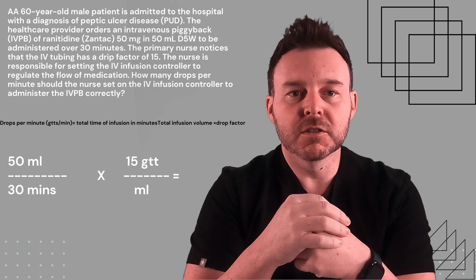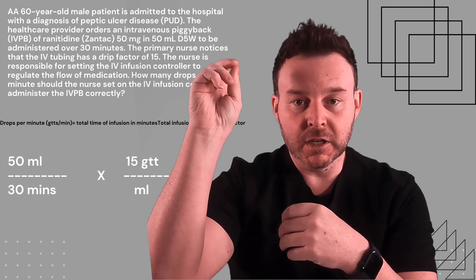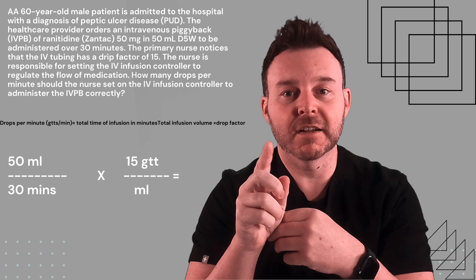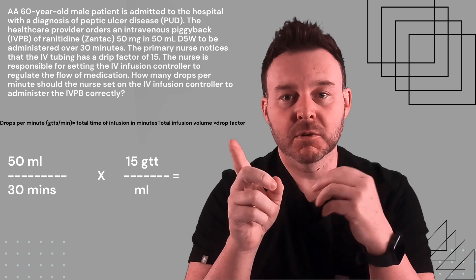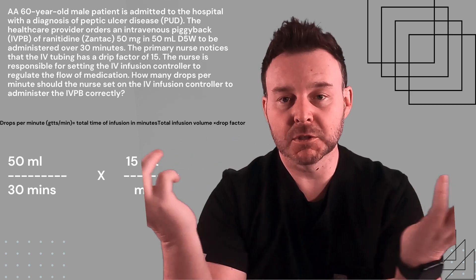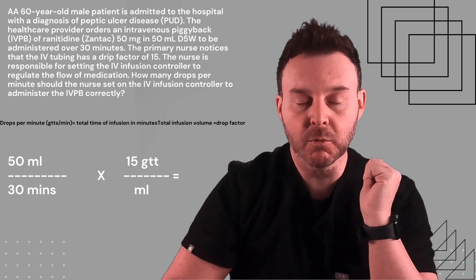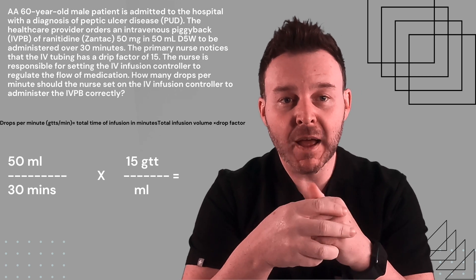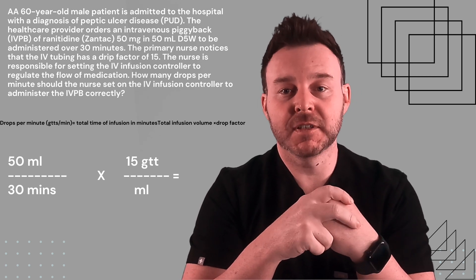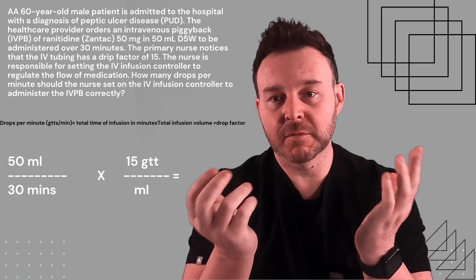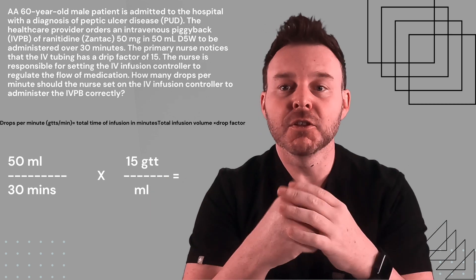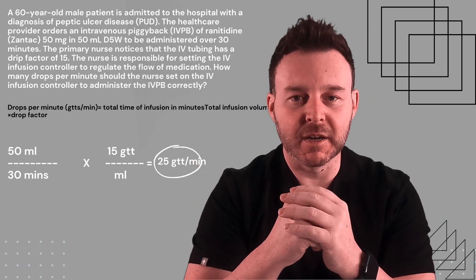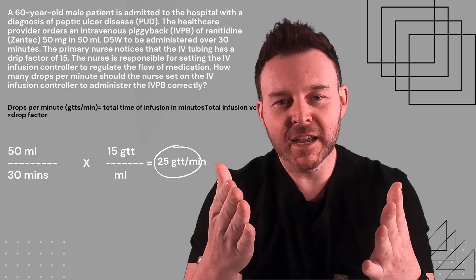In the equation, the milliliters cancel each other out and we're left with drops per minute, which is exactly what we want. When you do the math — 50 times 15, then divide by 30 — you get 25 drops per minute. Hope you have a wonderful day!